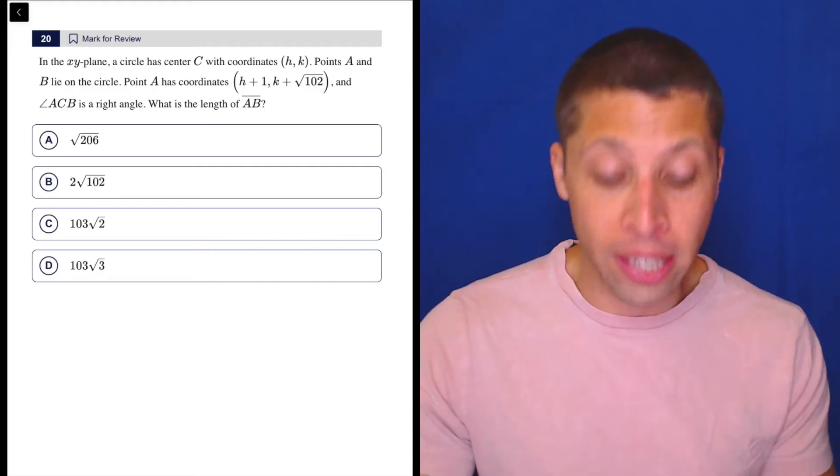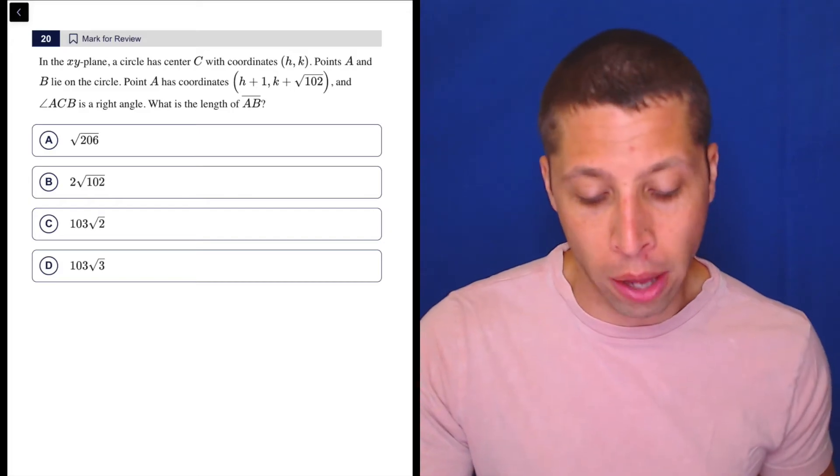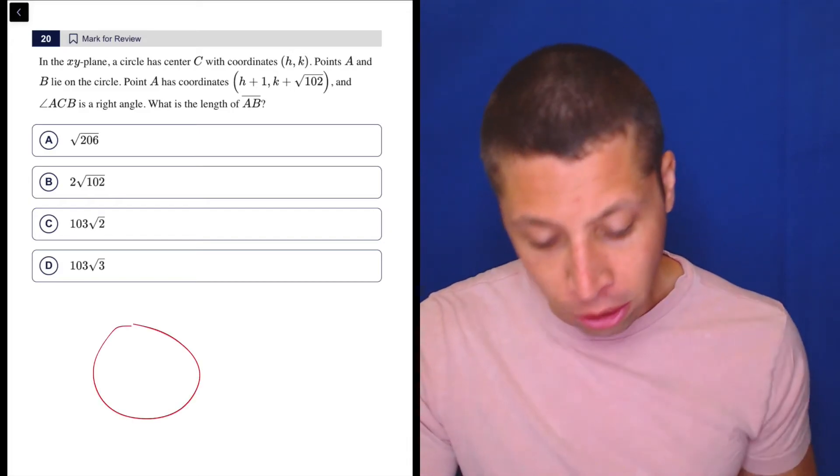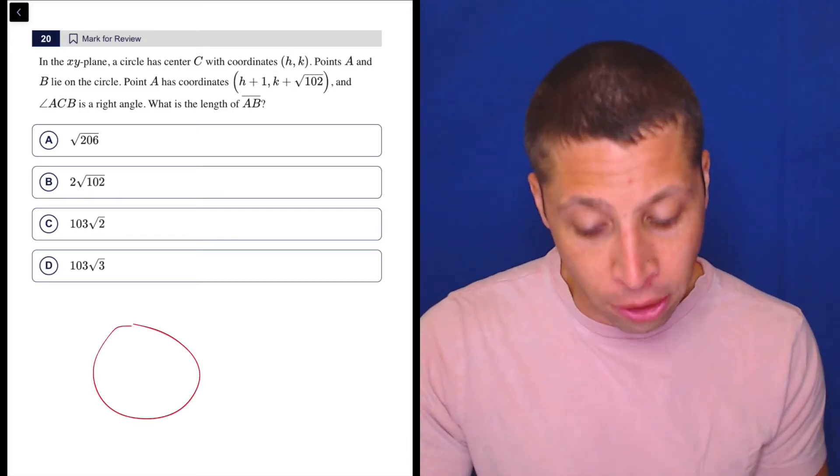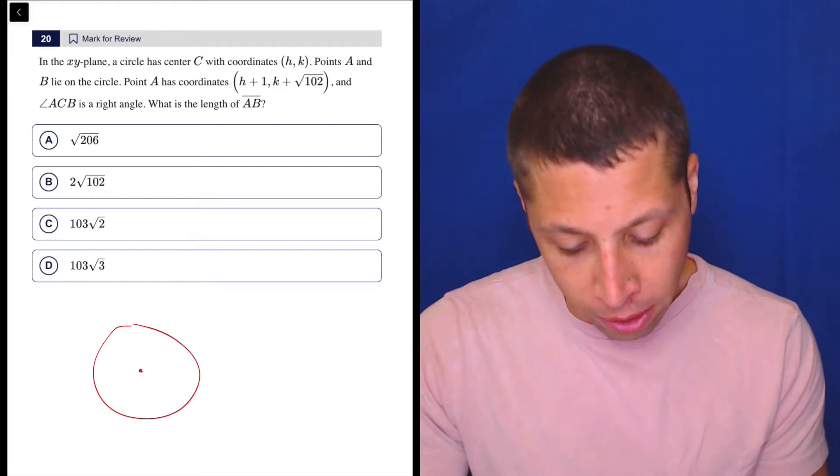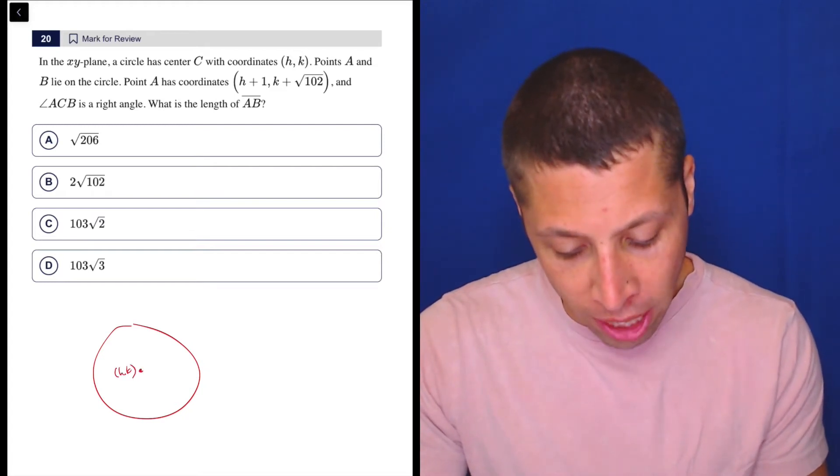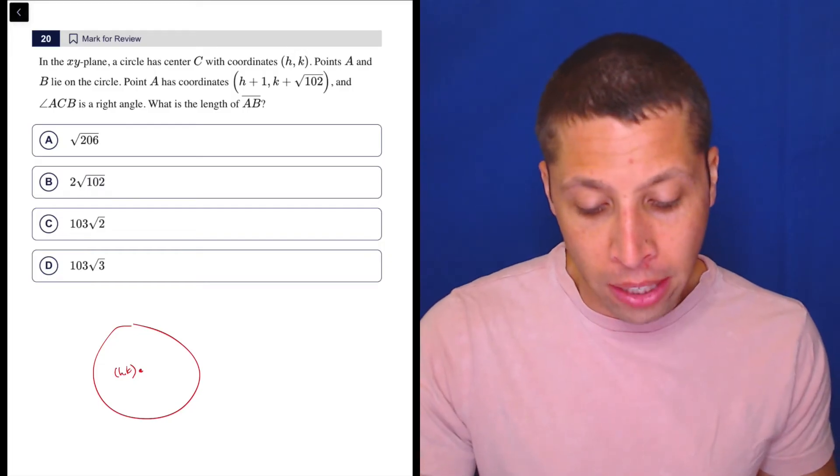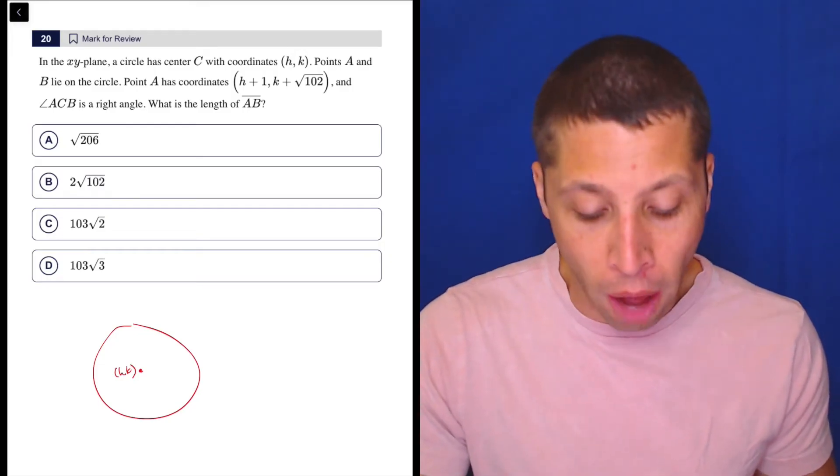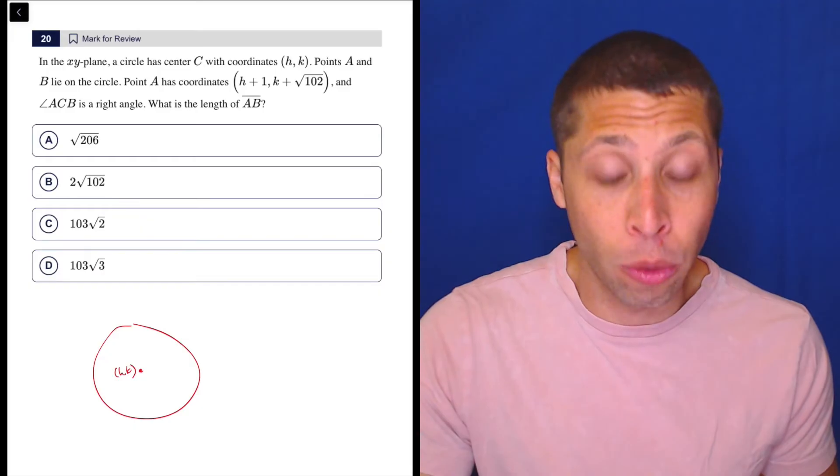So what most of you should do to start is grab your scratch paper and start drawing. So we have a circle, so there's our circle. It has a center of hk, so there's my center, I guess I can call it hk. And then it has this point randomly on there, and it's going to make, or it actually has two points randomly on the outside of the circle that make a right angle with the center.